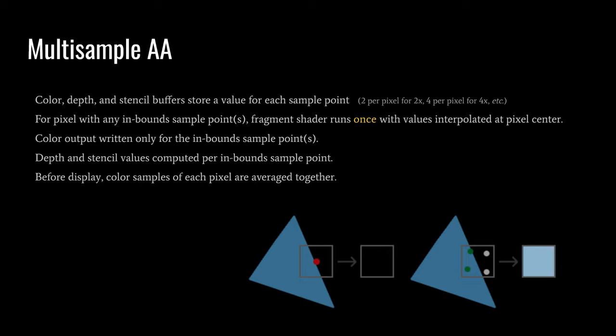Anyway, for any pixel where at least one of these sample points is inbounds of the triangle, the depth and stencil values are computed per inbound sample point, just as if we were rendering at a higher resolution. But even if more than one sample point is inbounds, we only run the fragment shader once, and we do so with the vertex attributes interpolated to the center of the pixel, just as if we were rendering the pixel normally.